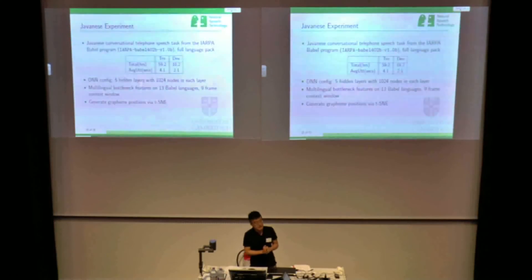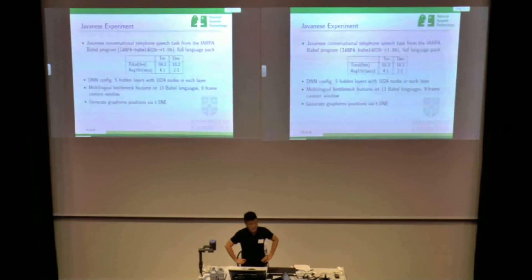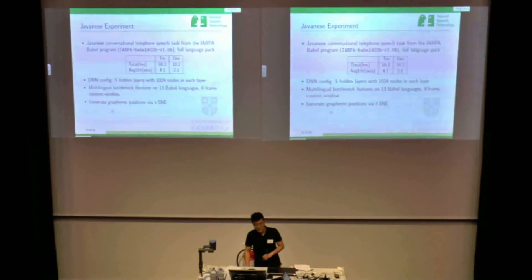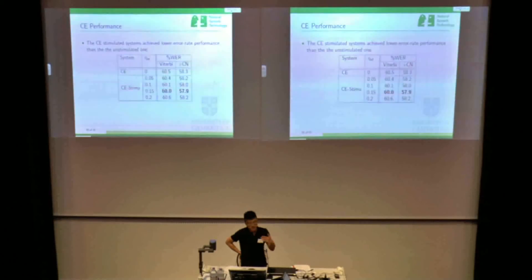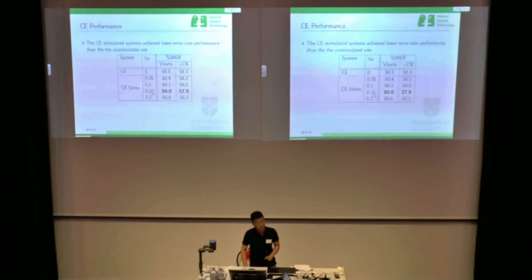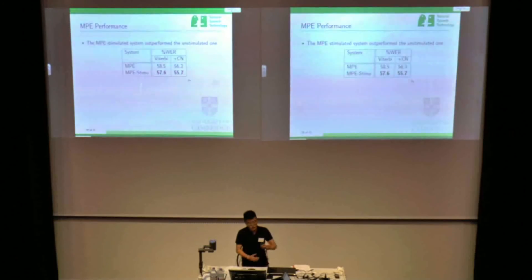The second dataset is the Javanese experiment. We used the full language pack of the six-hour Javanese task, with multilingual bottleneck features as the default setting for Babel evaluation from 13 Babel languages. We generated grapheme positions using t-SNE, the same method used in the broadcast news test. The best system is achieved at a penalty of 0.15. On the sequential MPE criterion, the stimulated system also outperforms the unstimulated MPE hybrid system on Javanese.